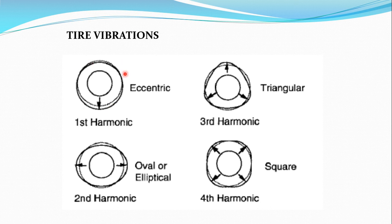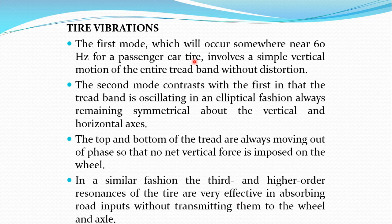These modes show how the tire behaves at different frequencies. At the first frequency the tire cross-section remains circular but moves with some eccentricity. At the second frequency it creates an oval or elliptical shape. At the third frequency a triangular shape is formed — the tire cross-section, initially circular, gets changed due to high frequency. At high speed the frequency is very high, so resonance conditions apply. For the fourth harmonic mode the situation is even more drastic. At the first mode near 60 Hz for passenger cars it involves simple vertical motion; the second mode produces an elliptical shape with top and bottom treads moving up and down.